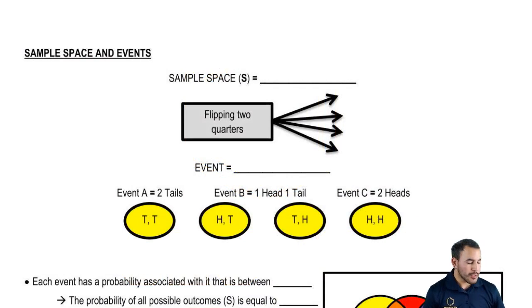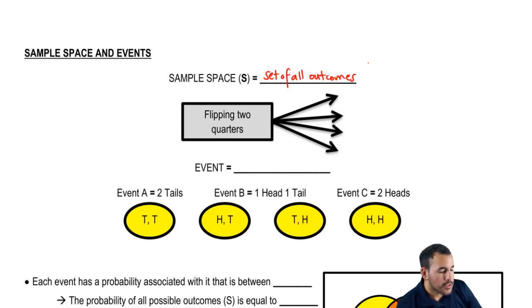So first thing's first, sample space. Sample space is essentially a set of all possible outcomes. So basically, if we talk about a particular situation, there are multiple different outcomes. Once we have all those outcomes, that's considered our sample space.